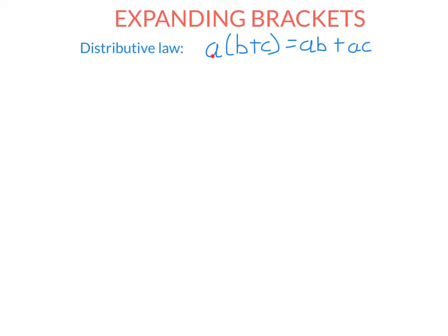Expanding brackets is when you have something that looks like this with brackets, and you end up with something that doesn't have any brackets. The way we expand brackets is by using the distributive law, so-called because you take the thing outside the brackets and distribute it to the first thing in the brackets — a times b — and then distribute it to the second thing in the brackets to get a times c. Of course, if no operation is written, it means it's times. So this is a times what's in brackets: a times b, and a times c.